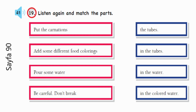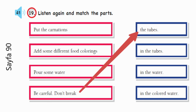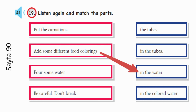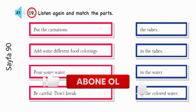Exercise 19. Listen again and match the parts. Page 90. Tape script 41. Good afternoon, kids. Good afternoon, teacher. Hey, look at the glasses in the teacher's hands. They aren't glasses, kids. They are tubes. Test tubes. Let's do an experiment. What's experiment in Turkish? It's dene. Okay. First, pour some water in the tubes. Be careful. Don't break the tubes. Then, add some different food colourings in the water. Take the carnations. Put the carnations in coloured water. Now, wait and see. The carnations will be colourful. Bye. Thank you.